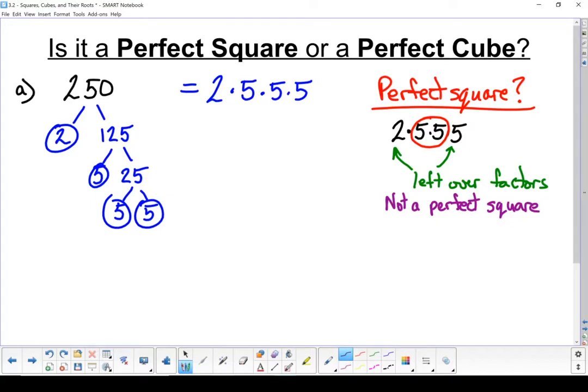If it's not a perfect square, maybe it's a perfect cube. To check if it's a perfect cube, I'm going to break it into groups of three, because in a cube the index is three. I've got three fives—one group.